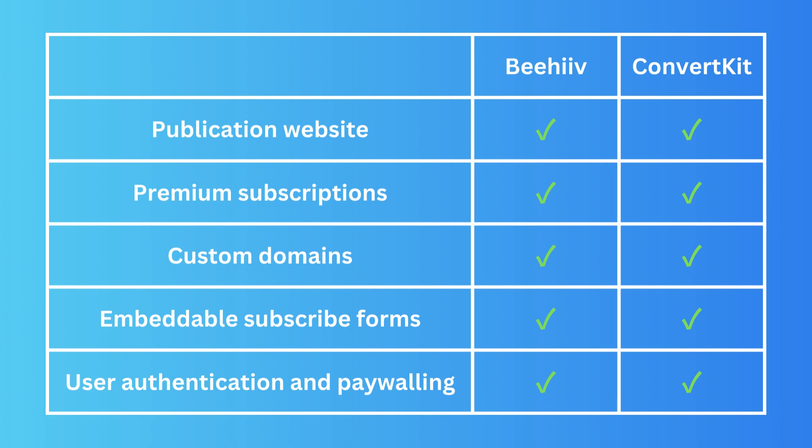For publications and websites, both Beehive and ConvertKit have premium subscriptions and custom domains, which is really nice — you don't want a URL like howtotool.convertkit.com or howtotool.beehive.com as it doesn't look professional. They both also have embeddable subscribe forms, so if you have a website like howtotool.com you can embed a form where visitors enter their email and sign up for your newsletter. User authentication and paywalling are also available on both platforms.